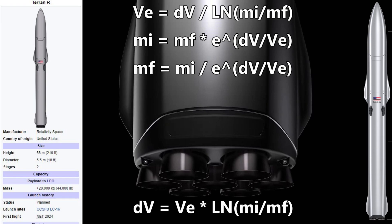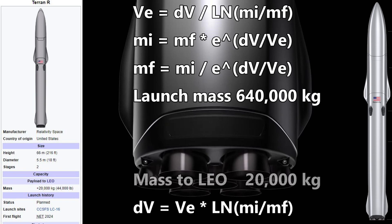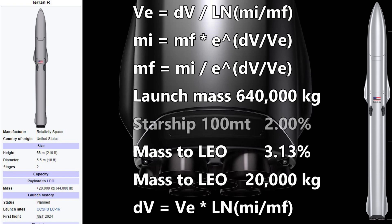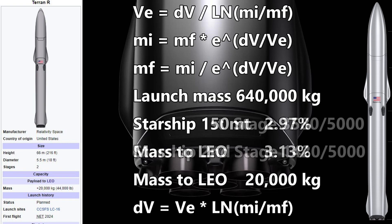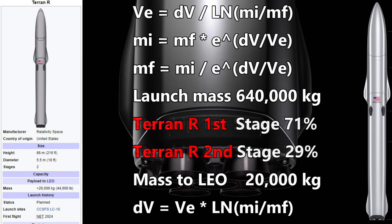Now let's look back at our Terran R. If we are correct that the launch mass is around 640 metric tons, and we are told that it can get 20 metric tons to low Earth orbit, this is a mass to orbit ratio of 0.313%, meaning 3.13% of our starting rocket mass ends up in orbit. It's a little better than the SpaceX Starship lifting 100 metric tons, but about the same with the new Starship goal of 150 metric tons. We couldn't find the mass of the Terran R stages, but we know the relative mass of the Starship first and second stage. Let's use those ratios for the Terran R and calculate our delta V.